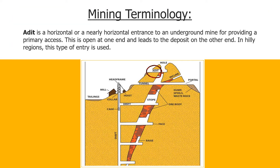Adit. It is a horizontal or a nearly horizontal entrance to an underground mine for providing a primary access. This is open at one end and leads to the deposit on the other end. Use of adits is normally restricted to hilly topographies.